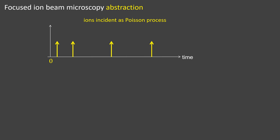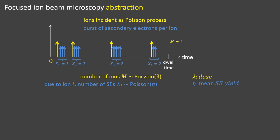Now let's shift to how we view focused ion beam microscopy. The yellow arrows represent the incident ions, and there is a burst of secondary electrons per incident ion, which are the blue arrows. There is some fixed dwell time, meaning fixed ion dose. In that dwell time, we have a Poisson distributed number of ions M, with mean lambda being the dose.